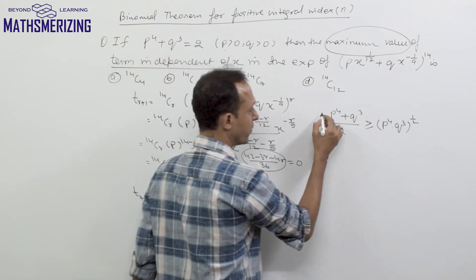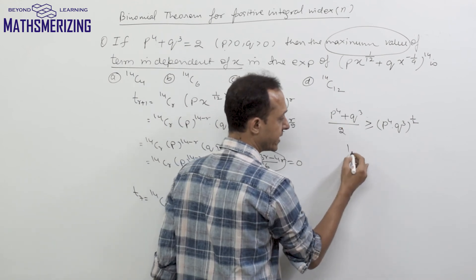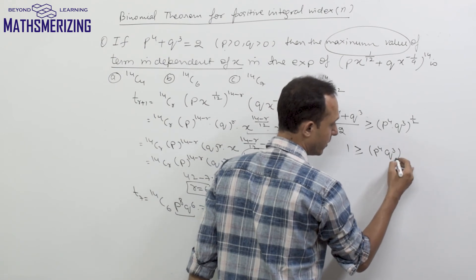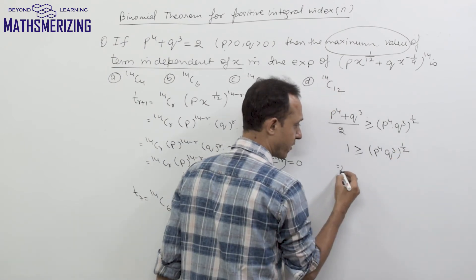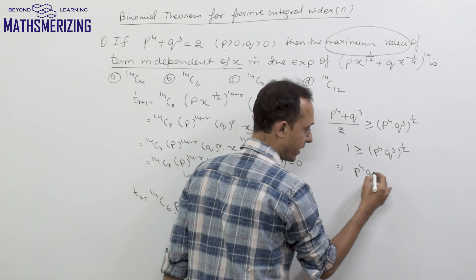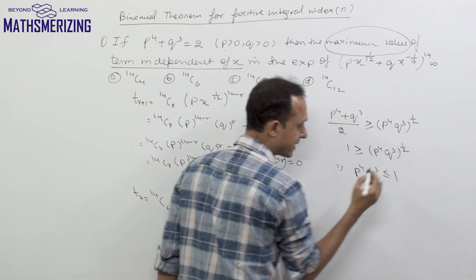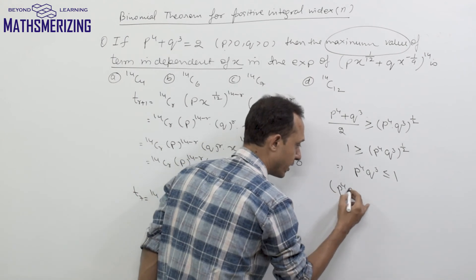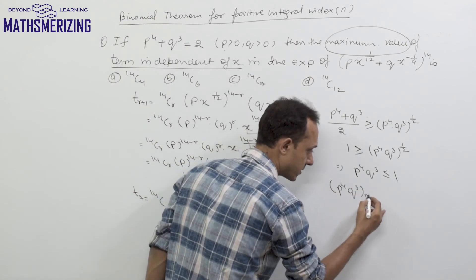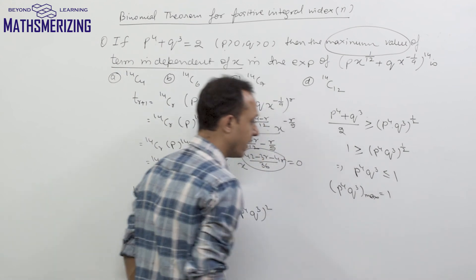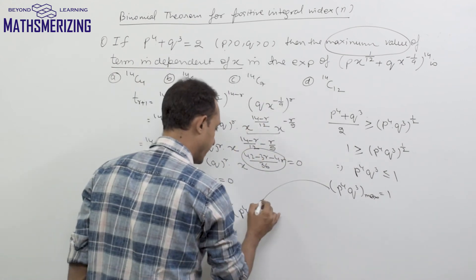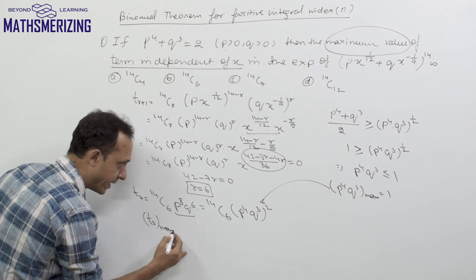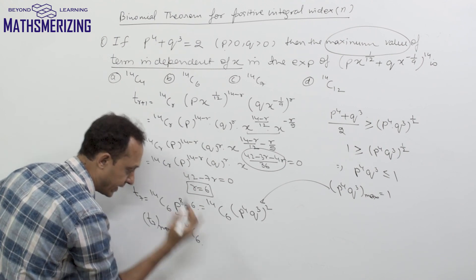Since p⁴ + q³ = 2, substituting gives 1 ≥ (p⁴·q³)^(1/2), so p⁴·q³ ≤ 1. Therefore, the maximum value of p⁴·q³ is 1. Putting this maximum value in, the maximum value of the term independent of x is simply 14C6.